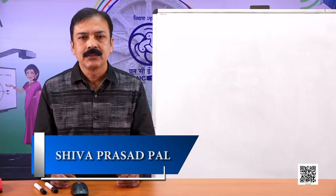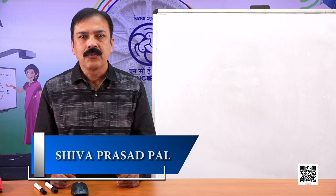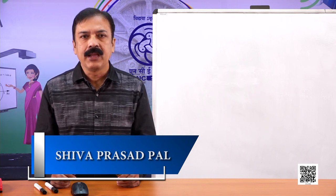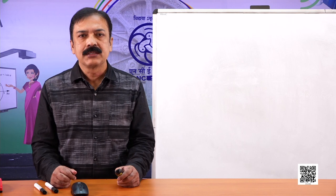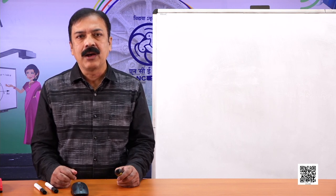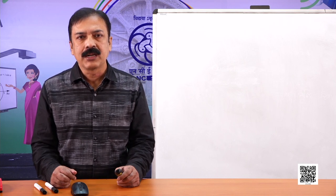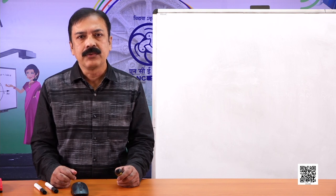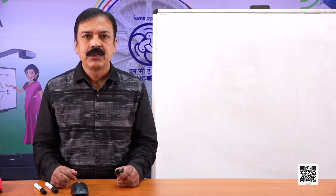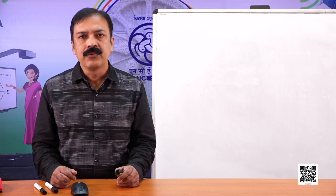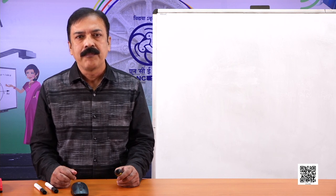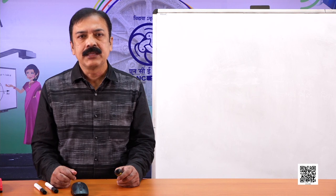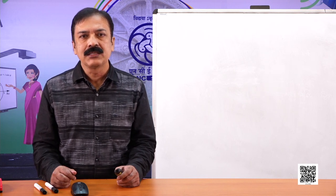Dear students, welcome to Quadrilaterals Part 6, Chapter 8 of Class 9 Mathematics. Earlier we have learnt about the various properties of parallelogram, rhombus, rectangle, square, etc. Today we are going to discuss a theorem in which we apply the properties of rectangle and parallelogram, and this theorem is popularly known as the Midpoint Theorem.